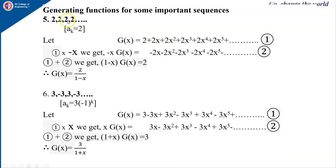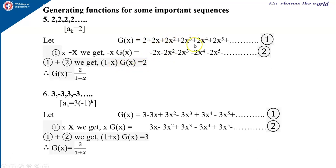Next, suppose the sequence is 2, 2, 2, 2, ... That is, each term a_k = 2. Then g(x) = 2 + 2x + 2x² + 2x³ + ... — equation 1. Multiplying by minus x: −x·g(x) = −2x − 2x² − ... Adding equations 1 and 2, we get (1−x)·g(x) = 2, since all terms cancel. Therefore g(x) = 2/(1−x).